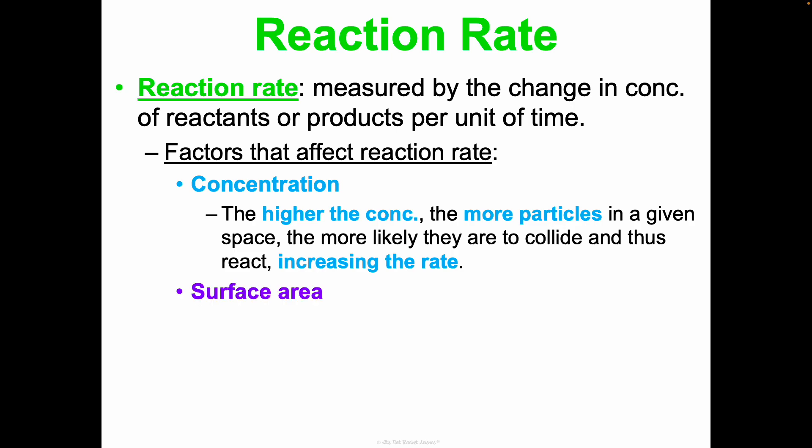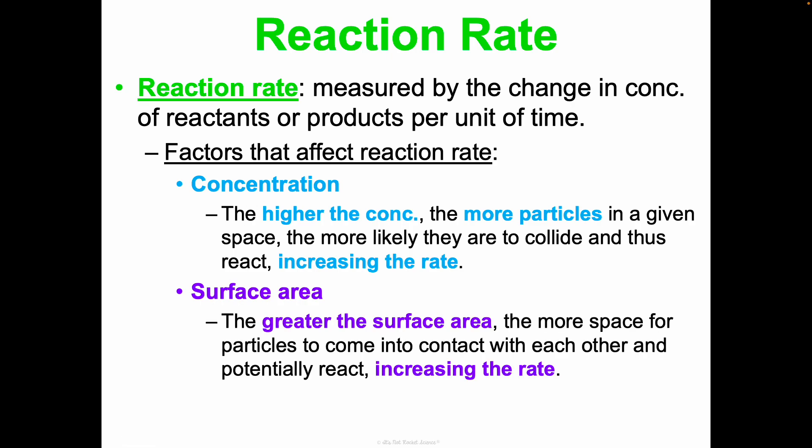Another factor that affects reaction rate is surface area. The greater the surface area, the more space there is for particles to come into contact with each other and potentially react, thus increasing the rate. If I decrease particle size, I'm increasing the surface area, which means more space for collisions. We saw this in our solutions unit when we looked at a sugar cube versus granulated sugar — the granulated sugar had a smaller particle size and more surface area, so it dissolved faster. Similarly, agitation — basically stirring — has a similar effect: when you stir, you expose fresh reactant to other reactant, causing more collisions.